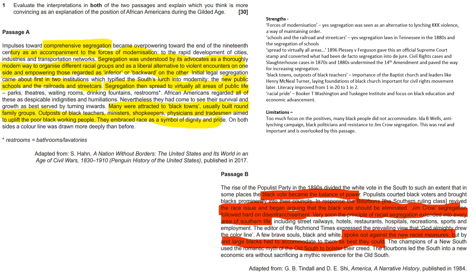On black towns and outposts: the importance of the Baptist church and leaders like Henry McNeil Turner laying the foundations of the black church, which is important for the civil rights movement. Also, because of education, literacy improved from 1 in 20 to 1 in 2. On racial pride, we talk about Booker T. Washington, the Tuskegee Institute, the focus on black education and economic advancement. There's plenty to say that Passage A is convincingly arguing about.